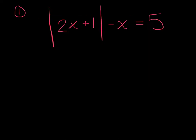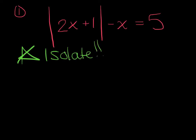I'll dive into this equation with you, and then I'll give you a few to practice on your own, and we'll move on to the next topic. Question one: the absolute value of 2x plus 1 minus x equals 5. We just established that we need to isolate the absolute value first. Is this absolute value by itself? No — there's a negative x sitting here, so let's go ahead and add that x to both sides.